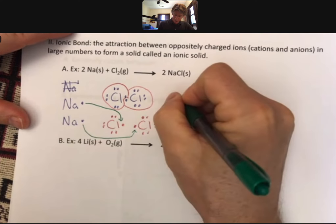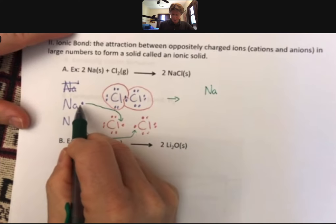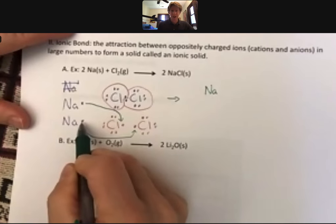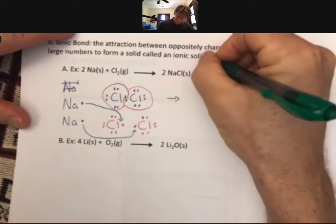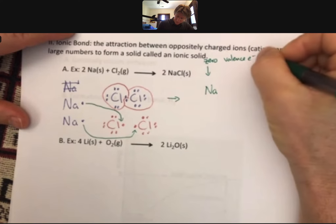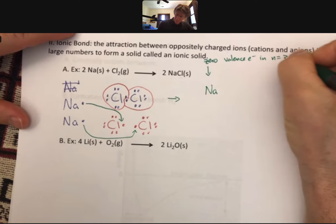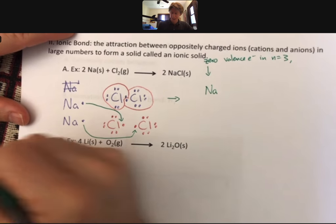When we get to the other side, what we're going to have is Na, which has zero valence electrons and N equals three, and Cl, which has eight valence electrons and N equals two.